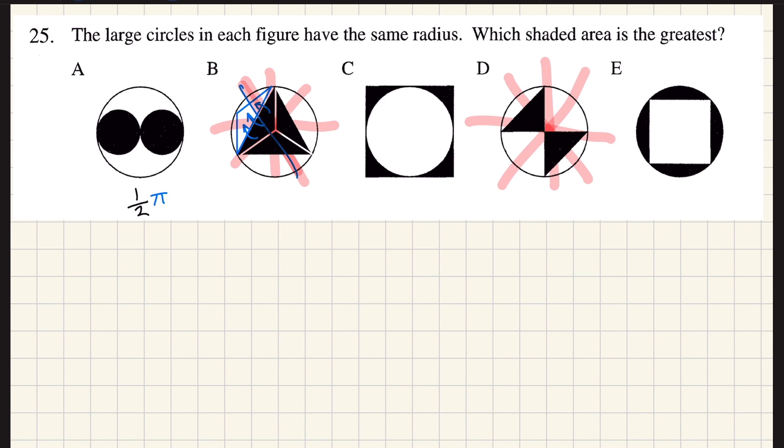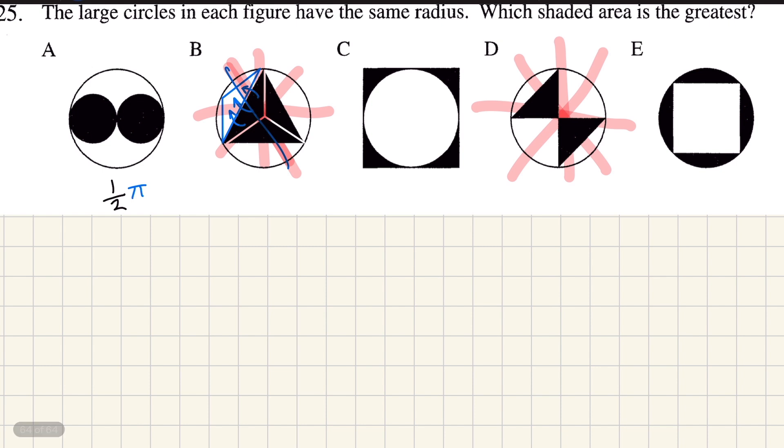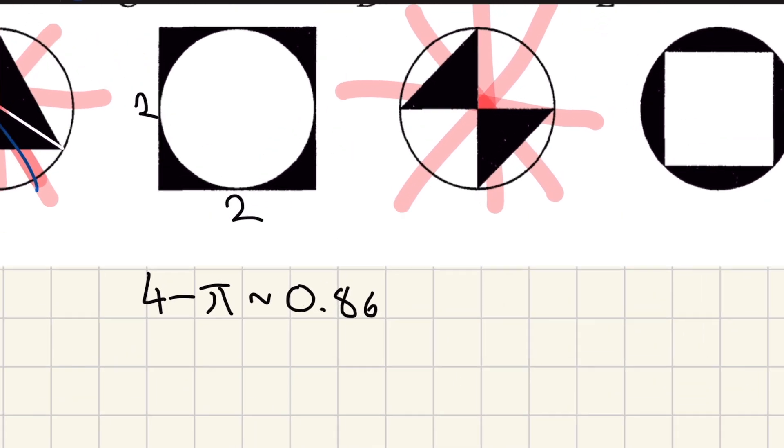Now, I'm afraid with C and E, we are going to have to do some calculation, but it's still quite simple. So C is going to be a square, which is two by two, because we said the radius of this circle is one. We chose that to make things easier. So the area of it is four and we know the area of the circle is pi. So you do four minus pi, which is approximately 0.86.